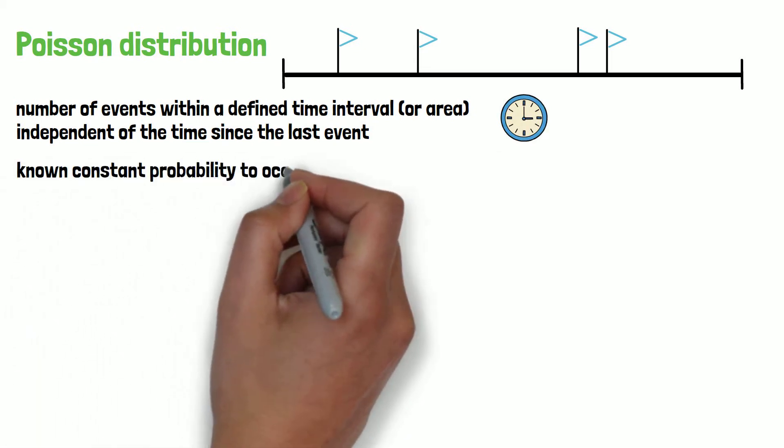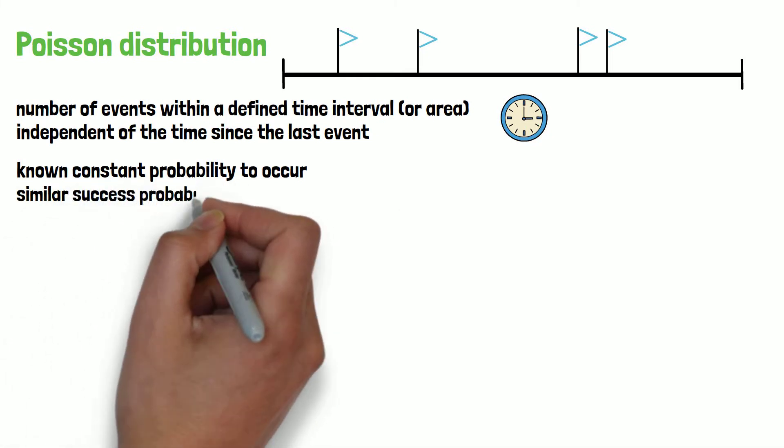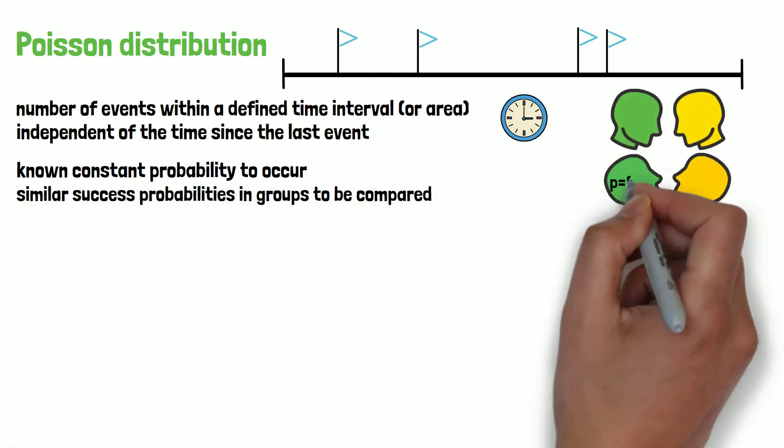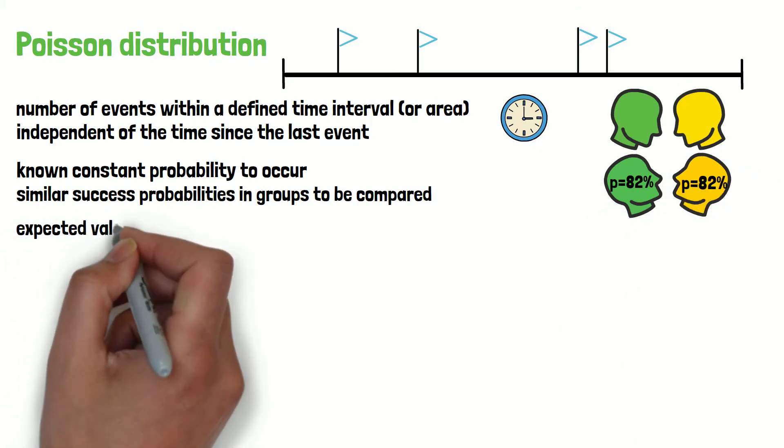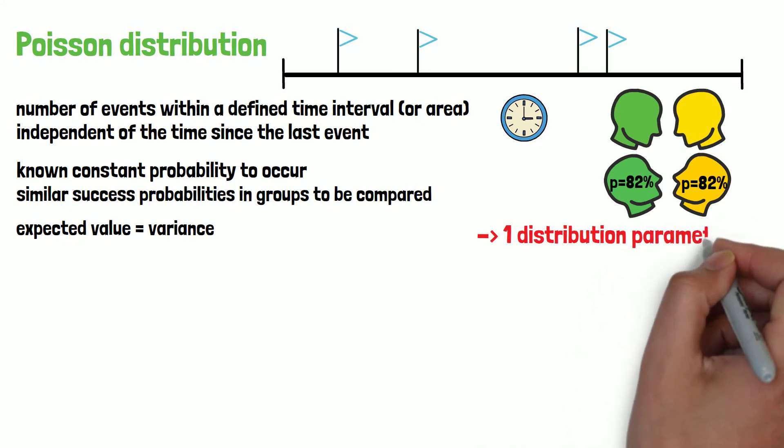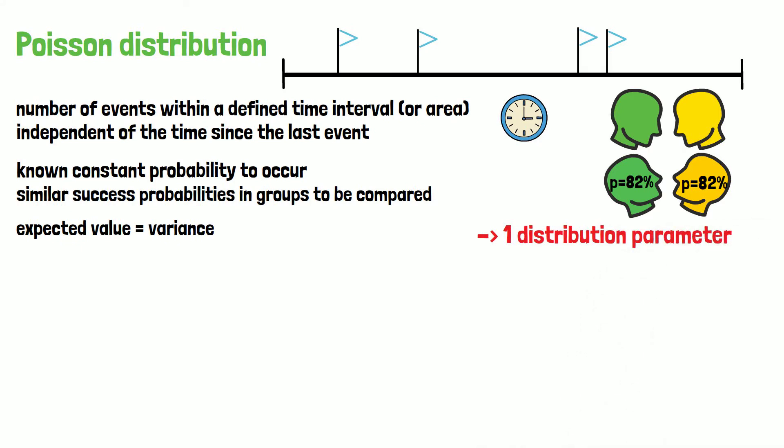In case two groups should be compared, the success probability should be similar in both groups. It is a univariate discrete distribution. Since the expected value and the variance are identical, only one distribution parameter is necessary to know the distribution.